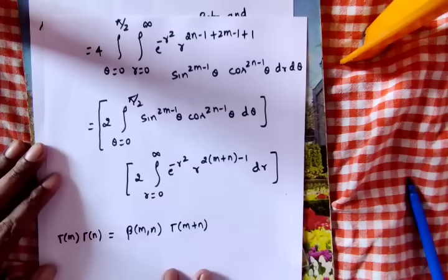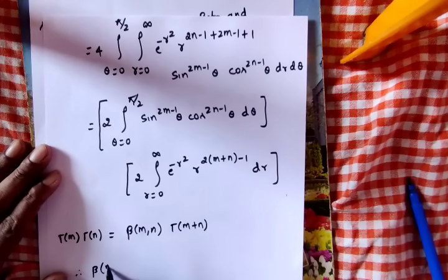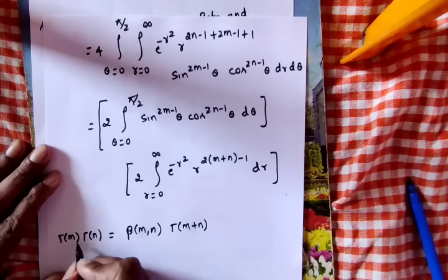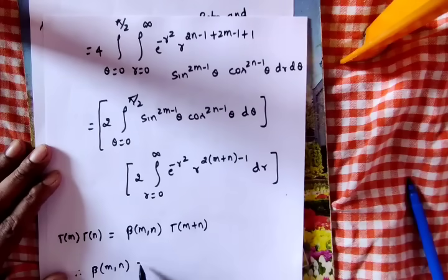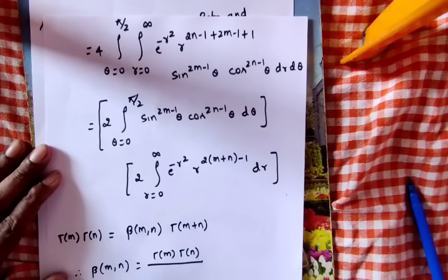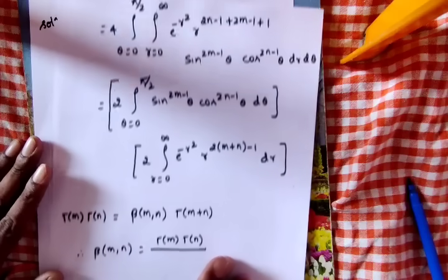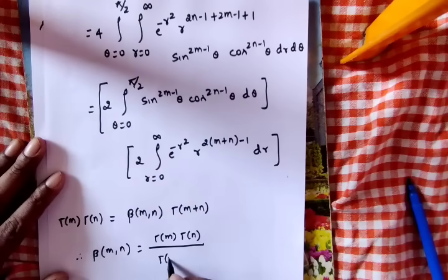Therefore, beta(m,n) is equal to gamma(m) into gamma(n) divided by gamma(m+n).